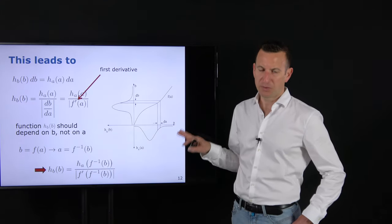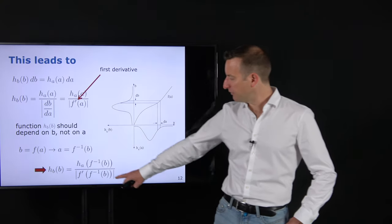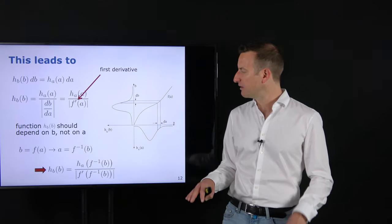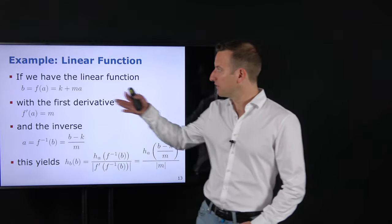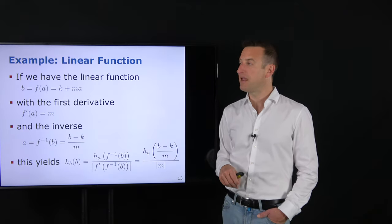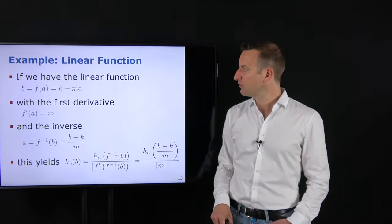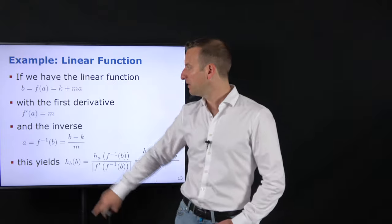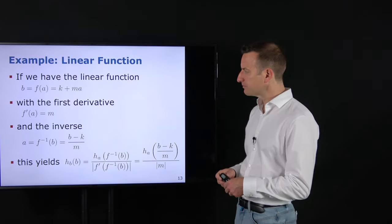This is the key insight we'll exploit to design F's when imposing constraints on HB. As a simple example, suppose F is a linear function: F(A) = k + m·A. The first derivative is simply m — a constant, since it's a linear function with constant slope. The inverse is: F⁻¹(B) = (B − k) / m. We shift by −k and scale by 1/m to invert the original shift and scaling.